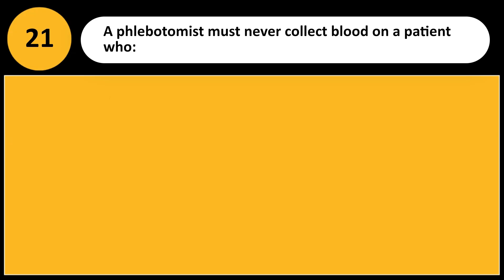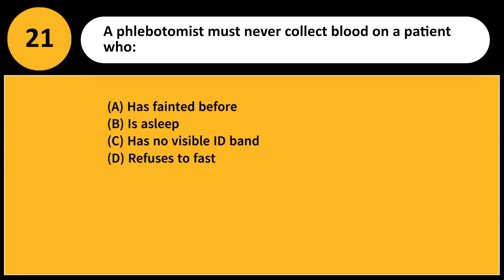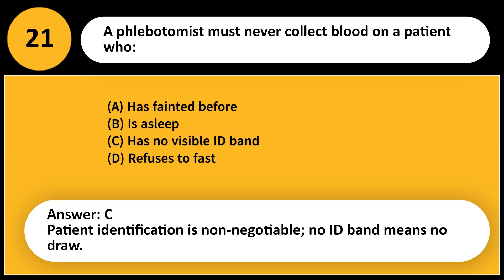A phlebotomist must never collect blood on a patient who: A. Has fainted before. B. Is asleep. C. Has no visible ID band. D. Refuses to fast. Answer: C. Patient identification is non-negotiable. No ID band means no draw.